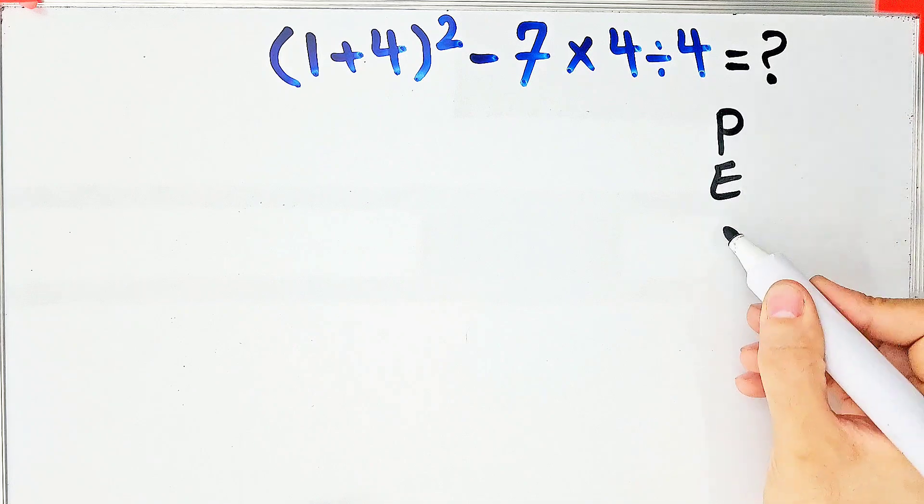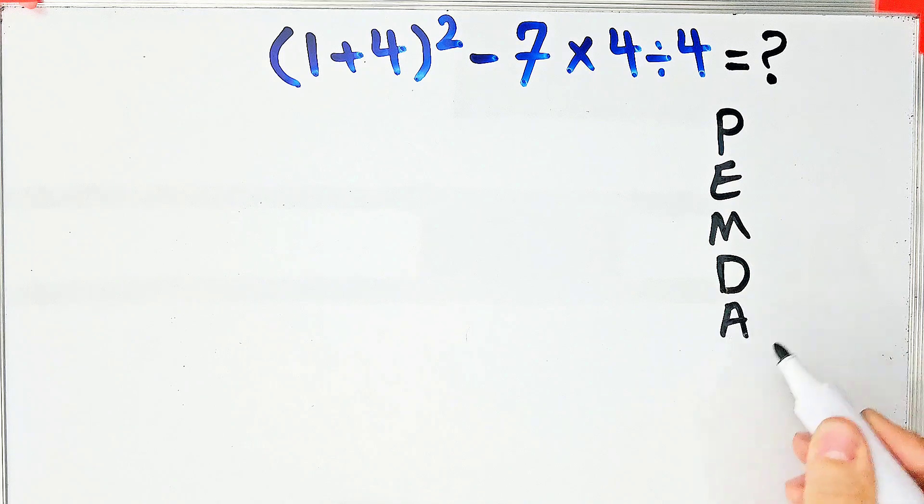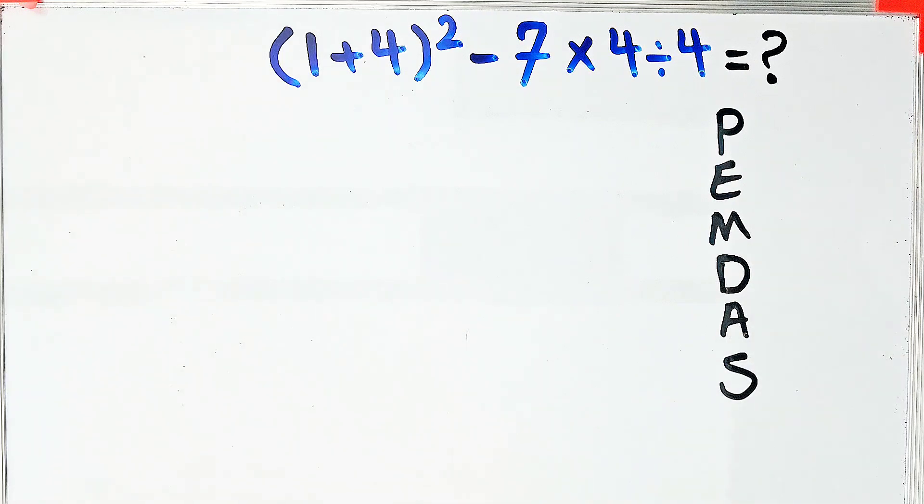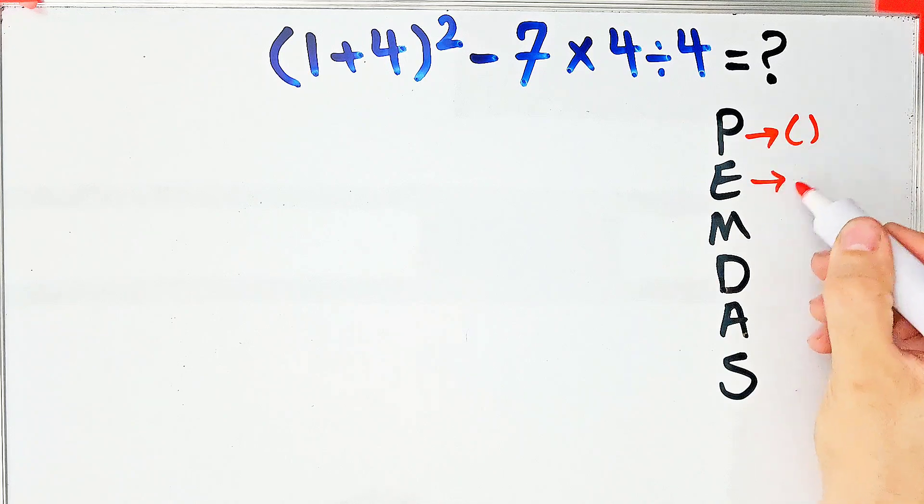To solve this question we need to follow the PEMDAS rule. PEMDAS shows the priority of mathematical operations. If you don't pay attention to this rule you get the wrong answer. In this rule, P stands for parenthesis, E stands for exponent.